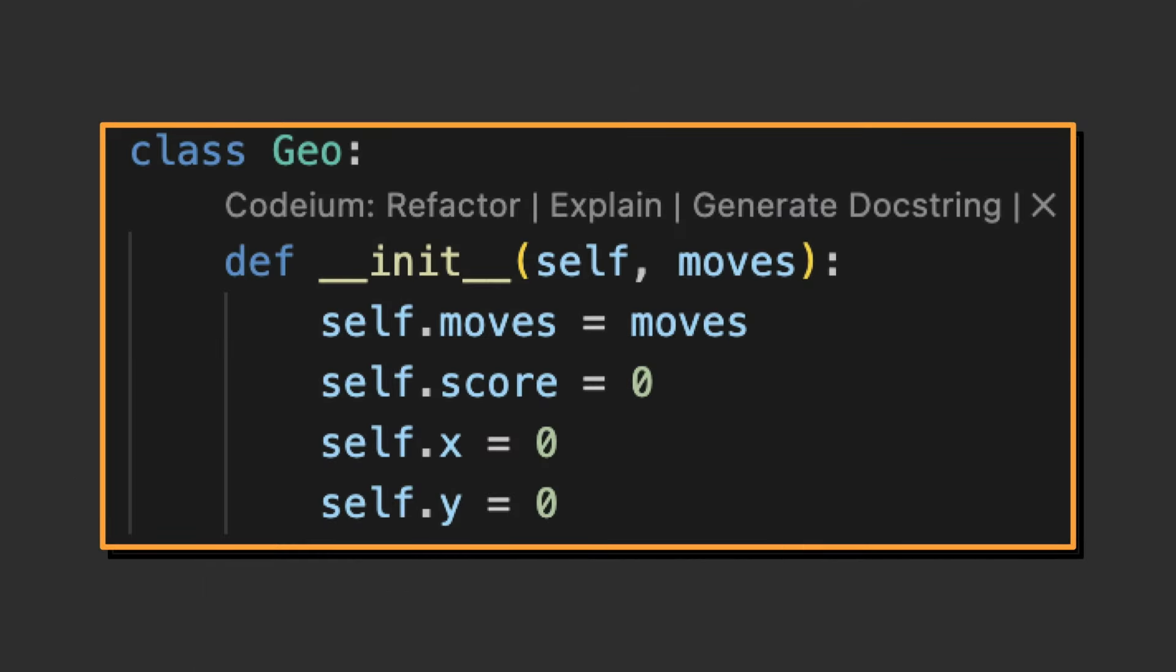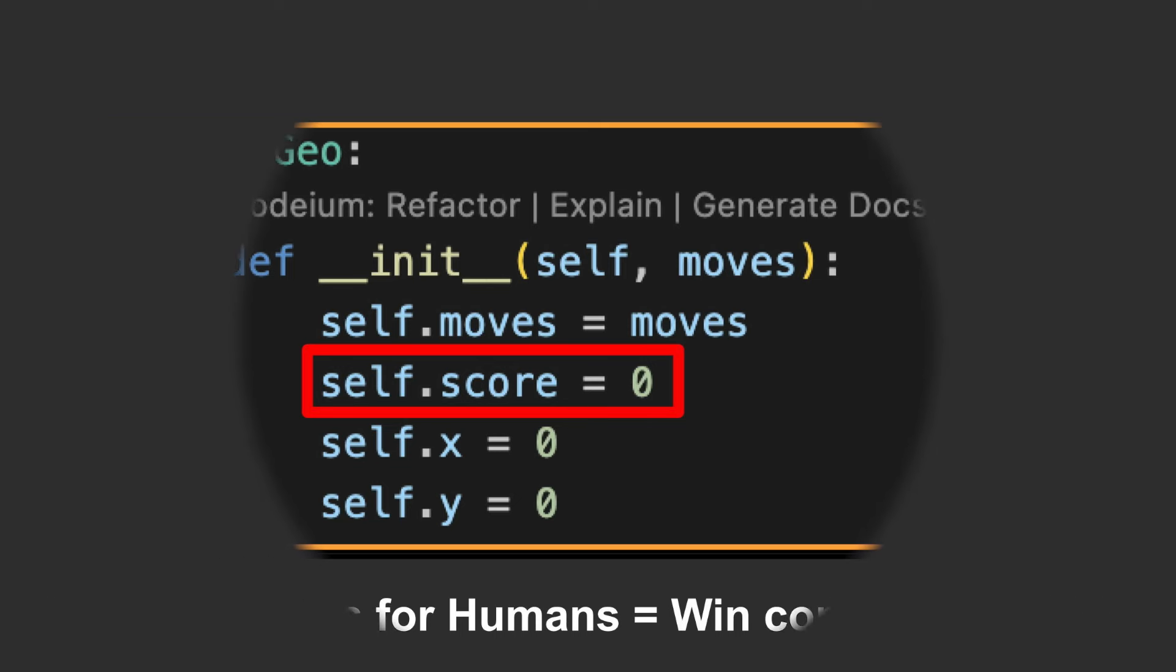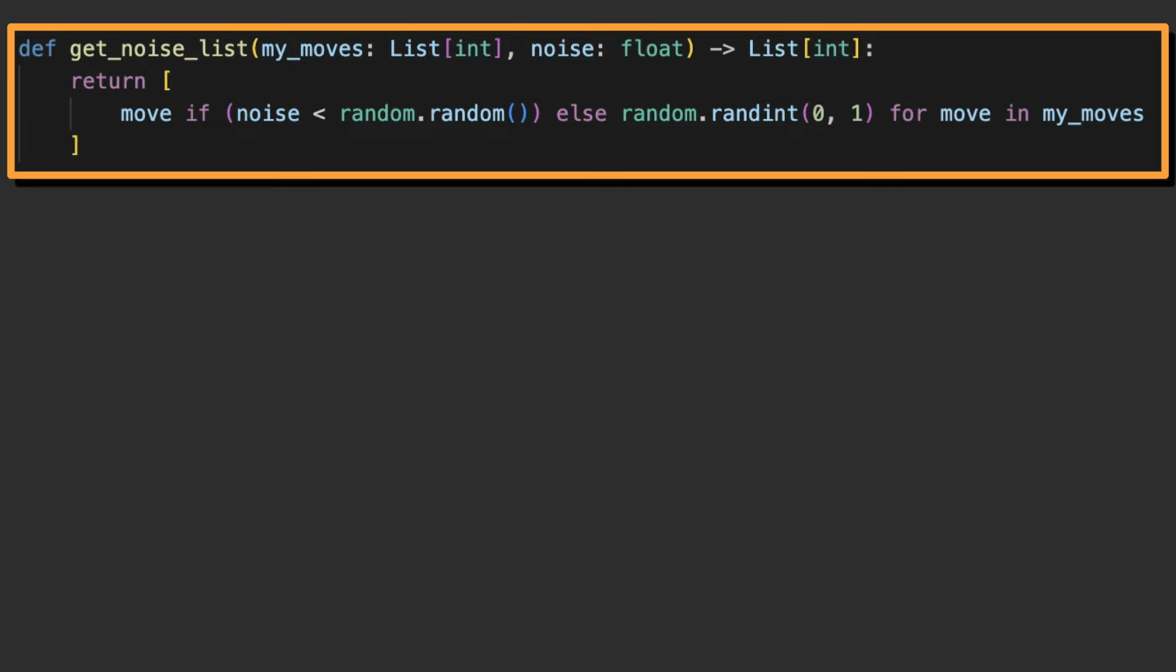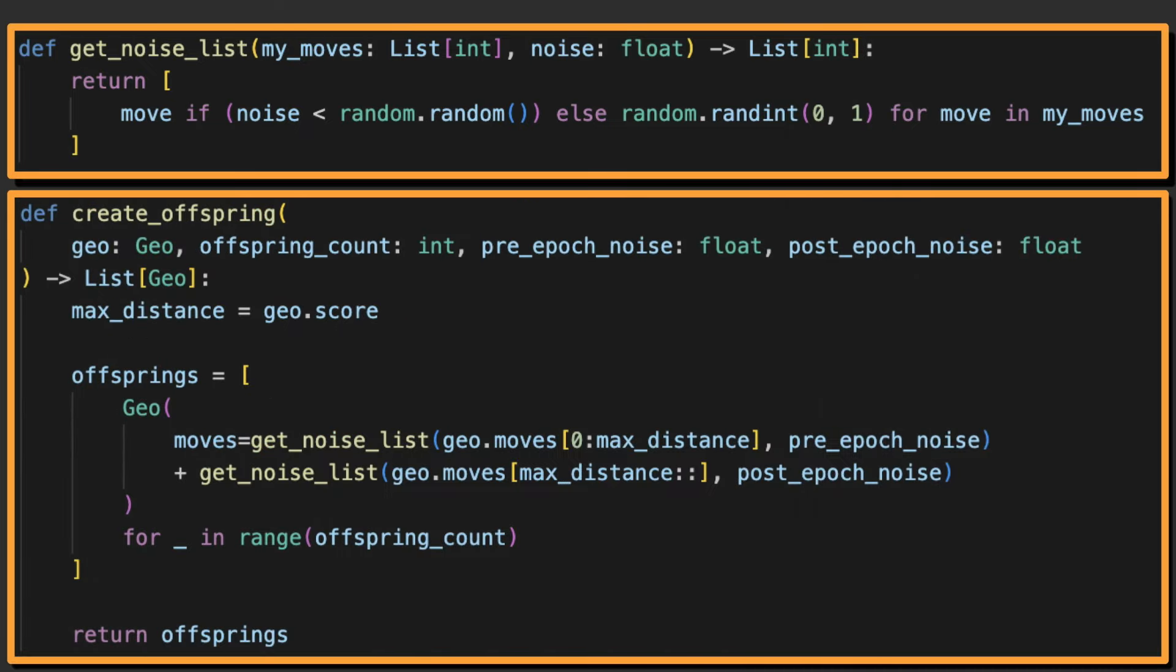That's what you can see here with our Geo class. In addition, we can reuse the score that the user will get and have that be what the model gets graded on. After that, we create two functions. One to create noise from a list and one to create offsprings. And there we have it. The AI is all done.